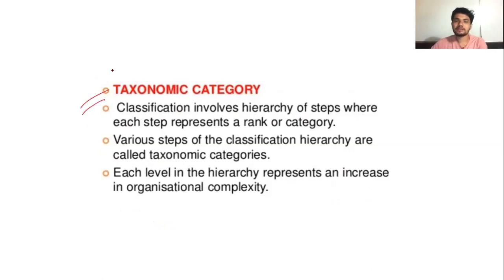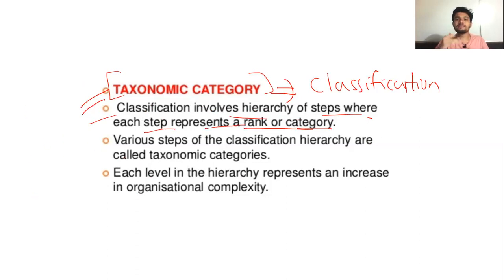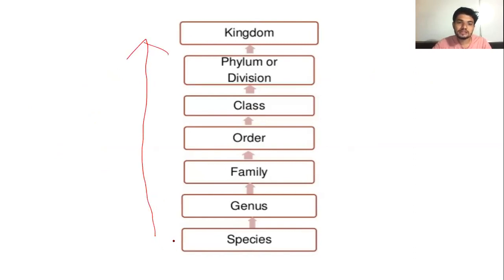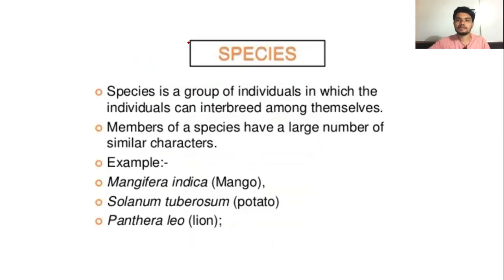Now, taxonomical categories. Classification involves a hierarchy of steps where each step represents a rank or category. One particular step is known as a taxonomical category. These are the taxonomical categories of biological classification. Moving from bottom to top: species, genus, family, order, class, phylum, and kingdom. We will discuss each one of these one by one.